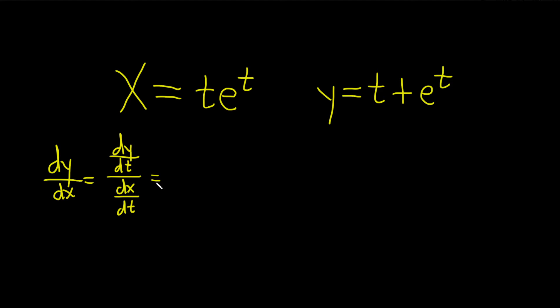So dy/dt is the derivative of y with respect to t. The derivative of t is 1 and the derivative of e to the t is just e to the t. So we just get 1 plus e to the t over.